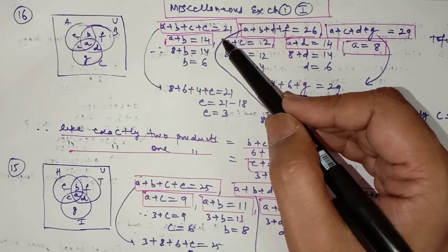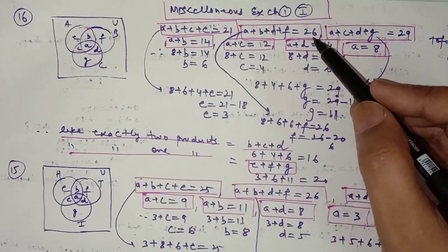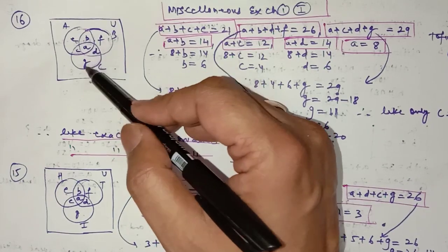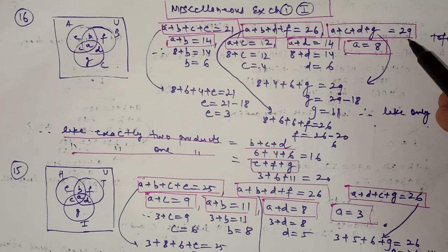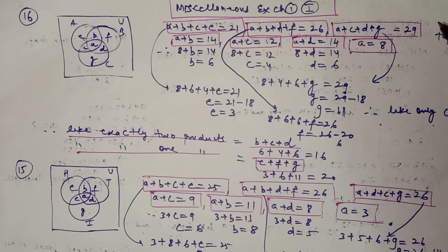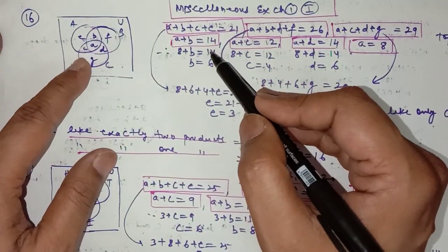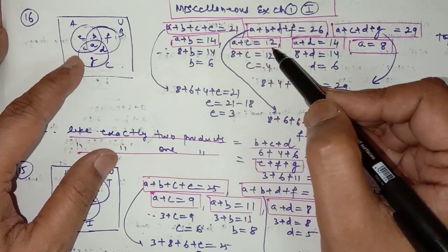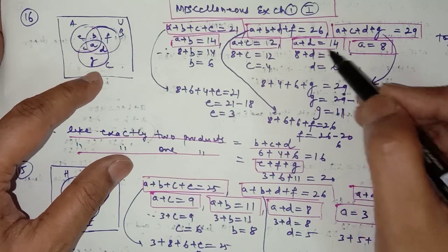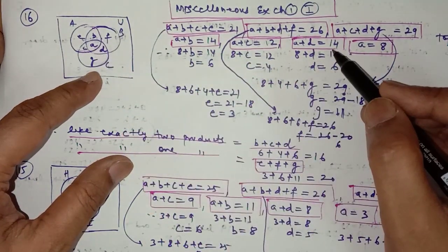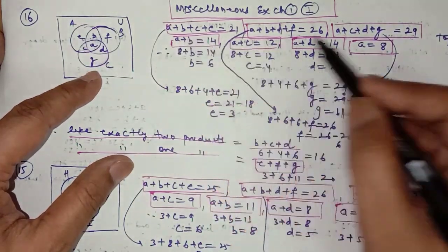The number of persons who like product A is given as 28: a + b + c + e = 28. The number who like product B is a + b + d + f = 26. The number who like product C is a + c + d + g = 29. The number who like both A and B is a + b = 14. The number who like both A and C is a + c = 12. The number who like both B and C is a + d = 14. The number who like all three products is a = 8.